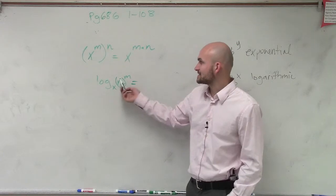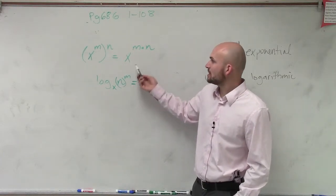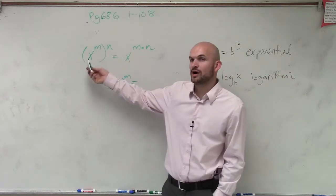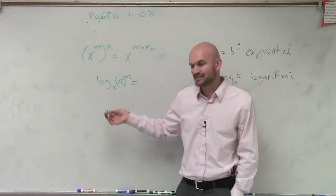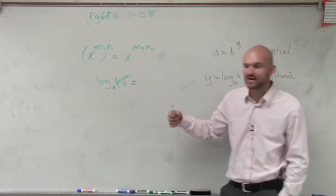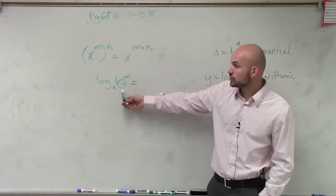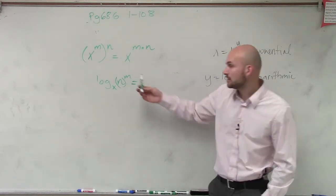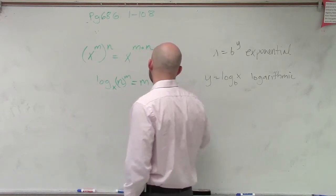So if I have log base x of n raised to the m power, right? Now we talked about when we had exponents, we took one and raised to another, we multiplied the exponents. Well, on a logarithm, this is a little bit more difficult, a little bit more of a stretch than product and quotient. But when we have a variable, or whatever our term is being raised to a power, we can rewrite that as the multiplication of m log base x of n.